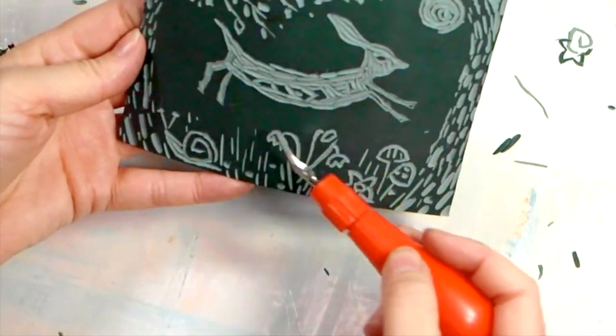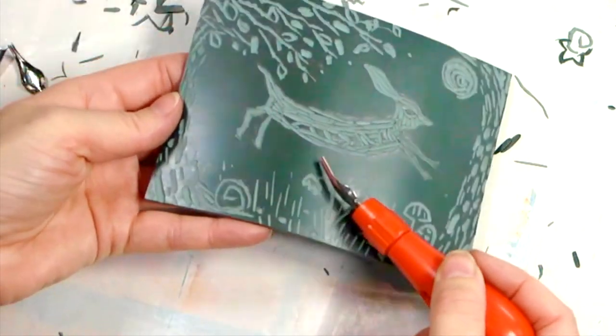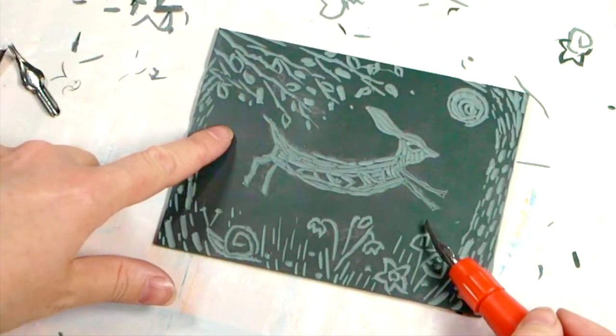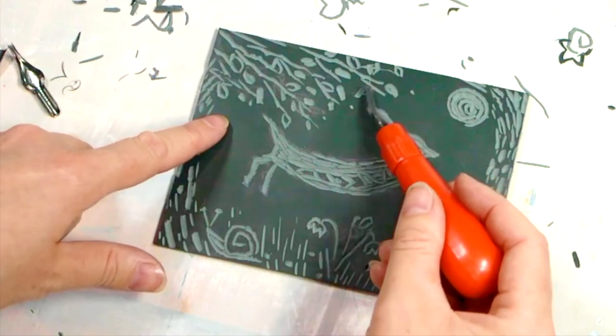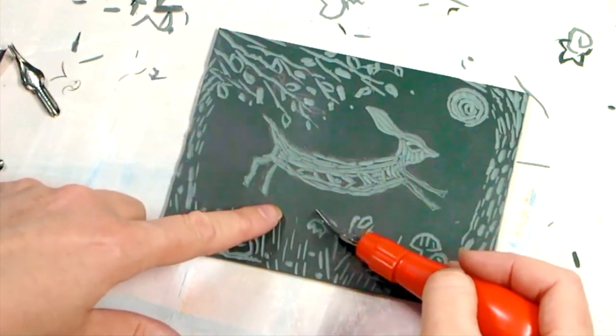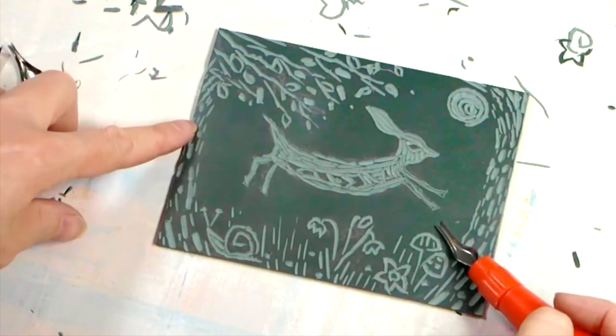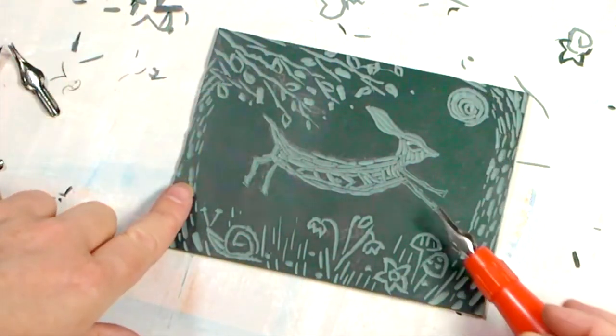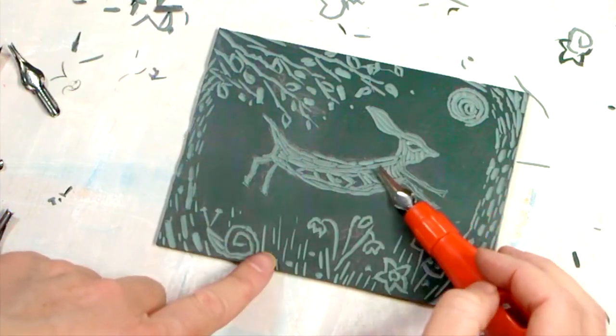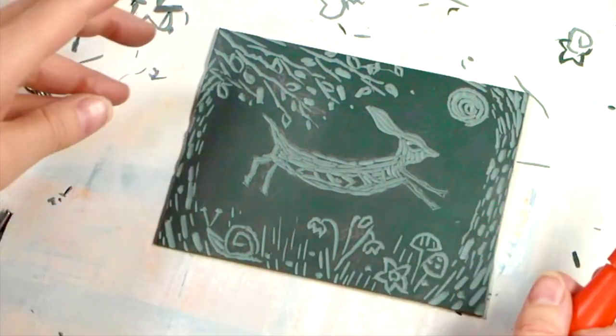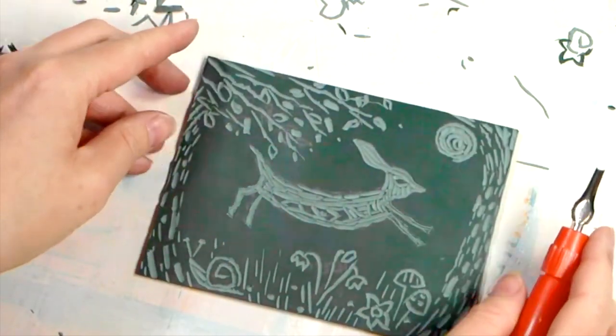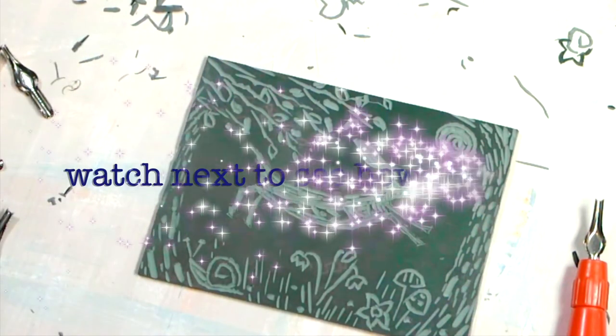Looking at this now, I know I'm going to have this lovely area where the lino has been untouched. It's going to be a really nice dark area of ink, whatever color I choose to print with. And all of these lovely marks around the outside and across the hare, jumping hare in the middle, they're going to be white. So I think I'm done, I'm going to stop. Let's see how he prints.